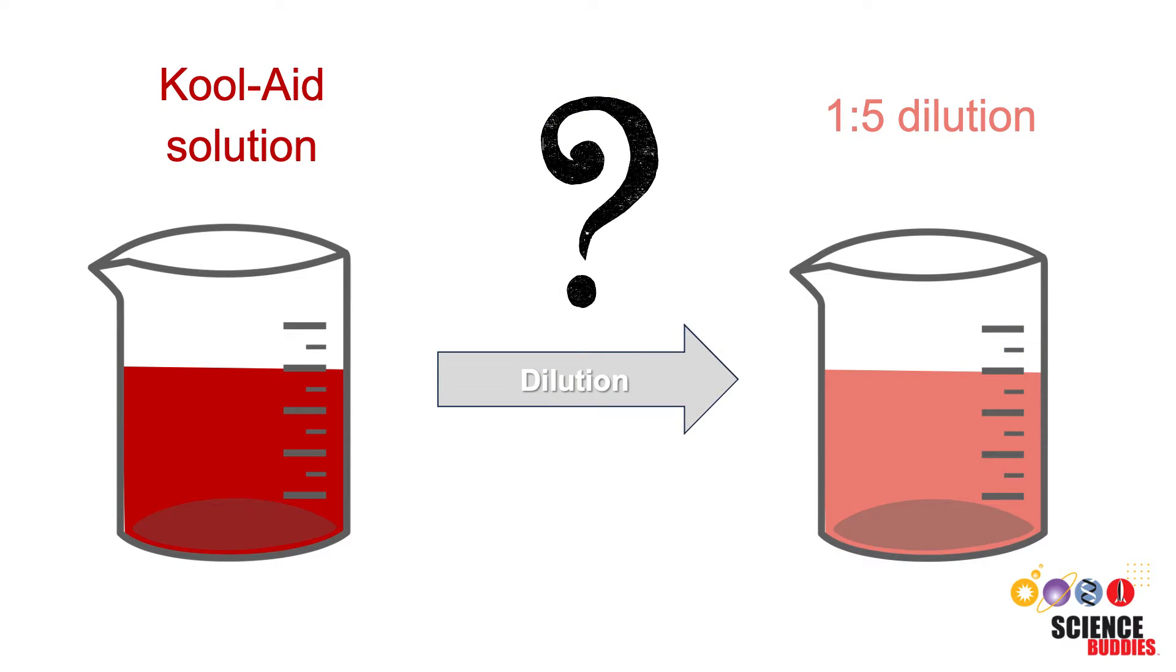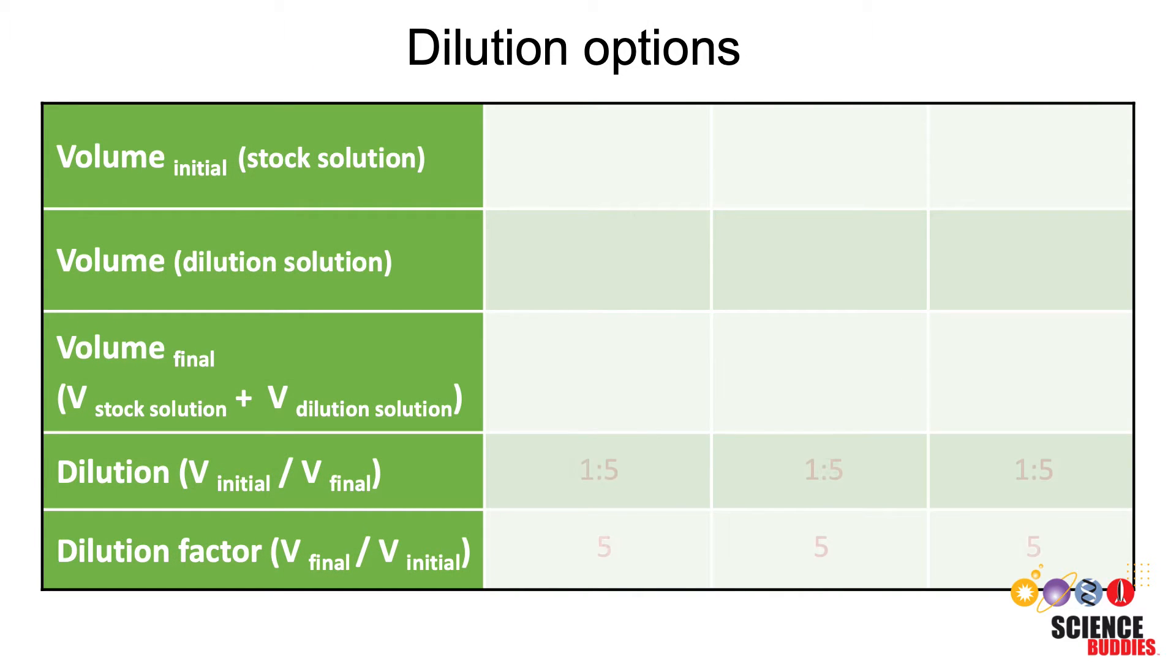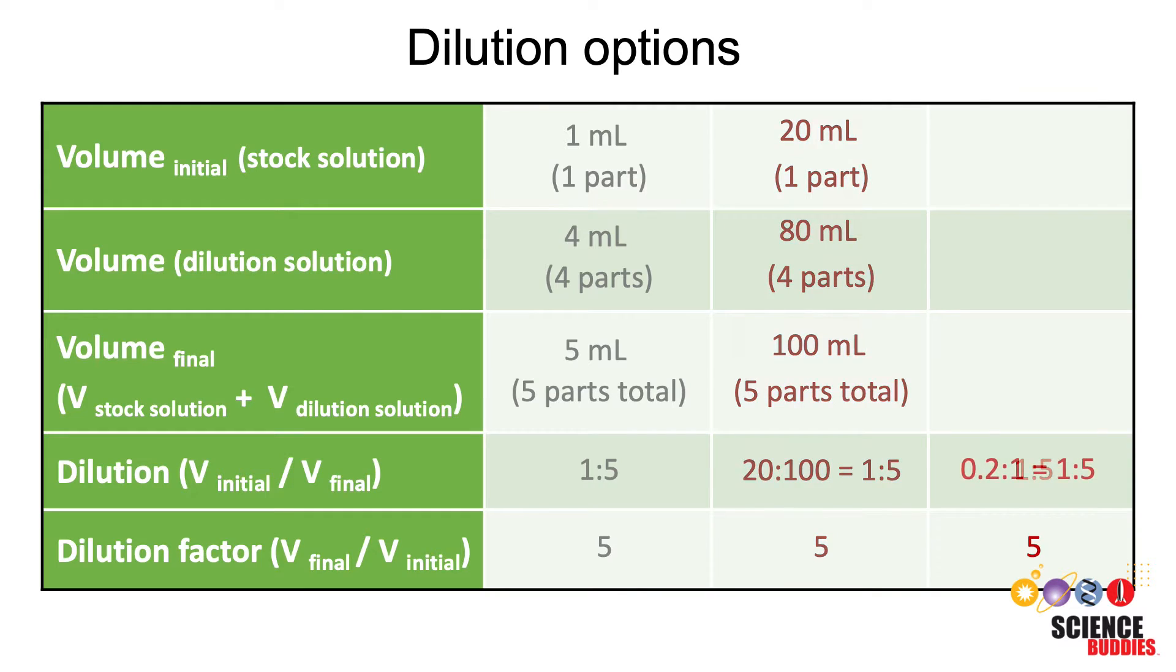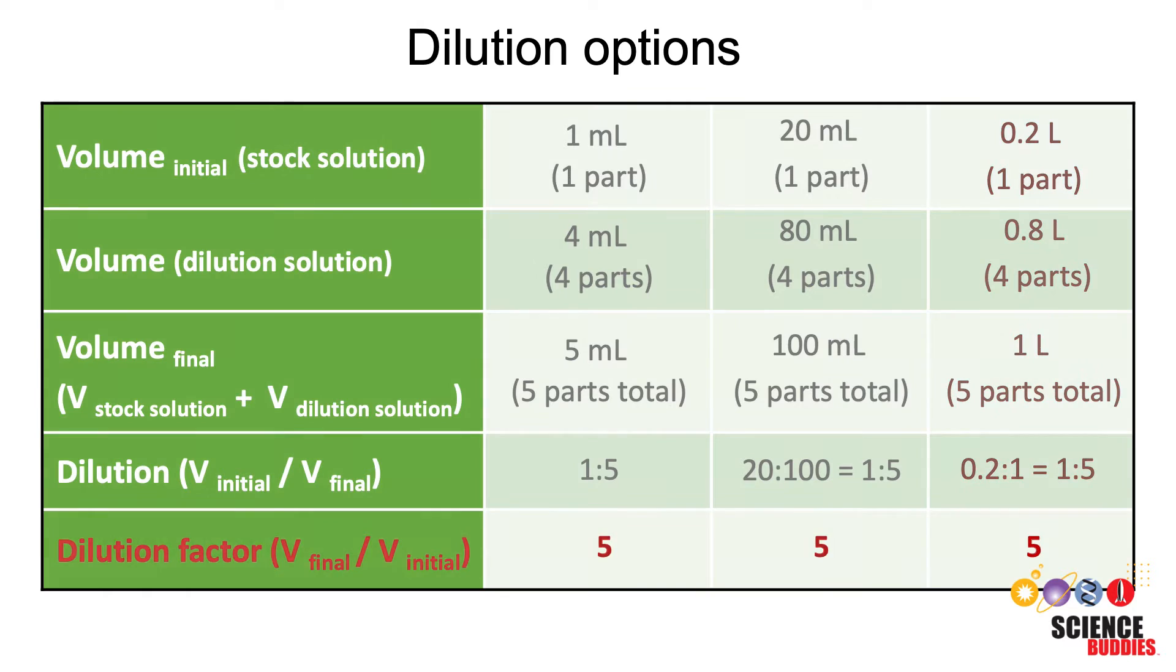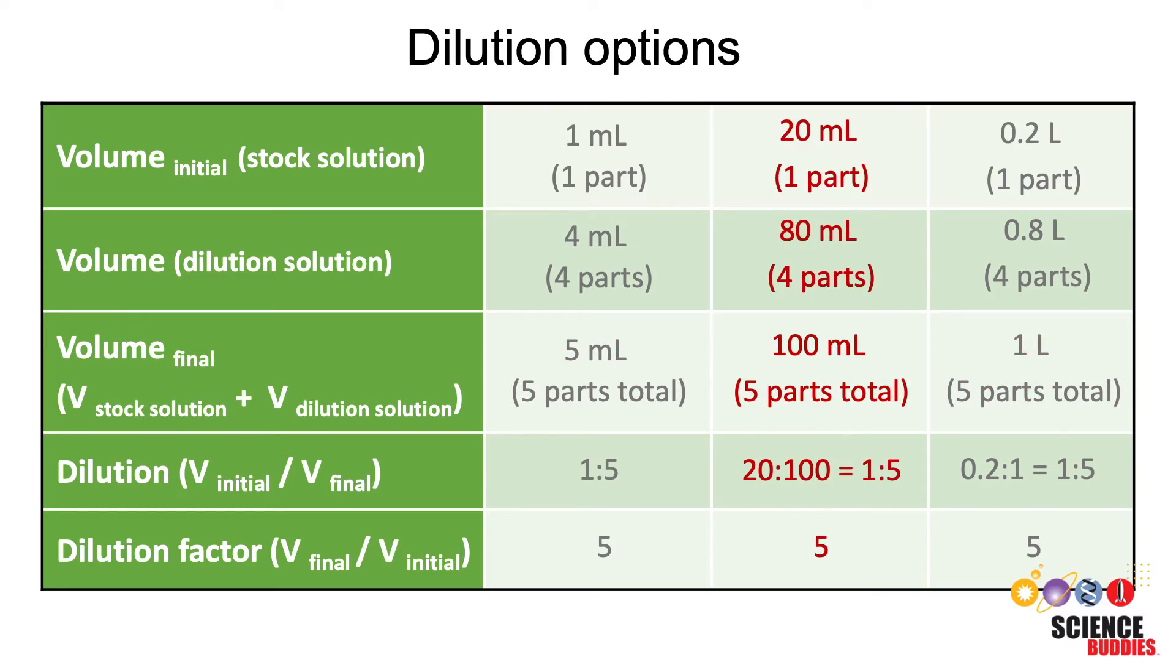Let's take a look at how we can make a 1 to 5 dilution of our Kool-Aid solution. Here is a table that shows some options for how to do that. To make a 1 to 5 dilution, we could add 1 ml of Kool-Aid solution to 4 ml of water, or 20 ml of Kool-Aid solution to 80 ml of water. The dilution factor for all these dilutions is the same. We will choose the middle option for our dilution.